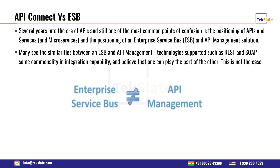IBM API Connect is a proxy/gateway product where you can create, run, and manage APIs with security — so what's the difference from an ESB? As a gateway sitting in the DMZ zone, API Connect supports only a few transformations, not complex transformation or business interface development. ESBs offer universal protocol connectivity — IBM MQ, webMethods, TIBCO — whereas API Connect is limited mainly to HTTP, HTTPS, and WebSocket.